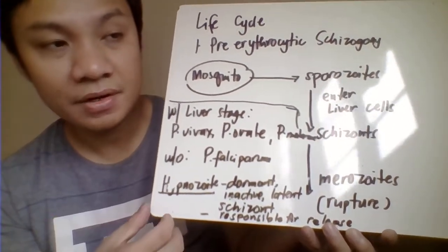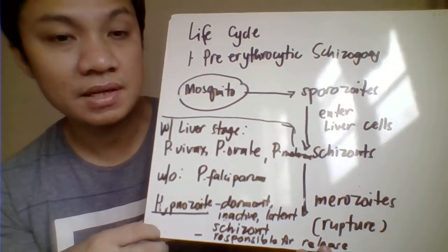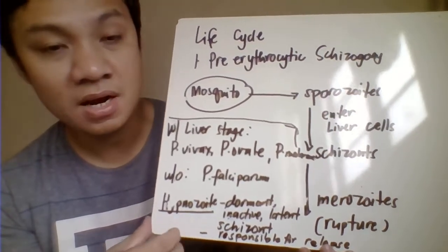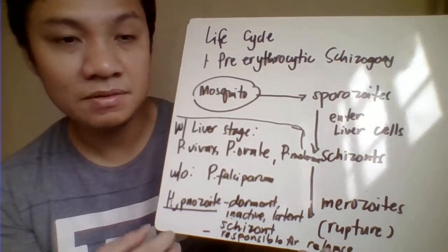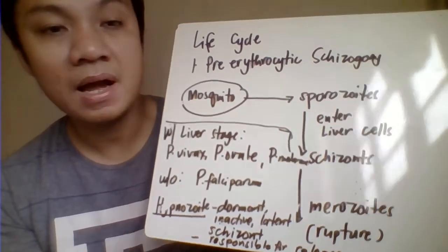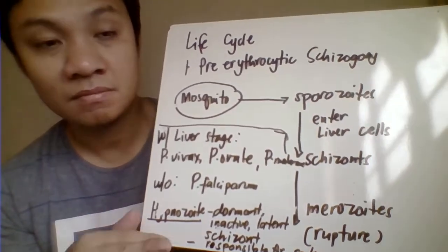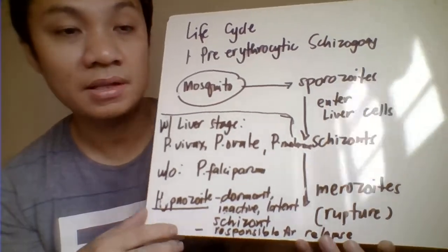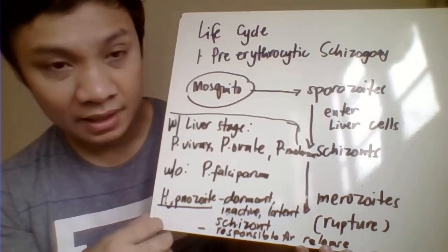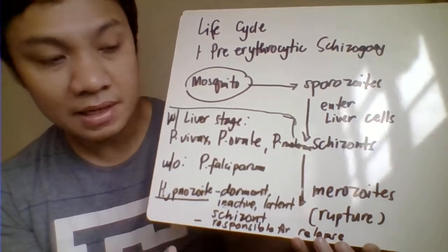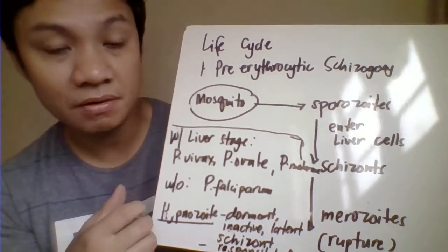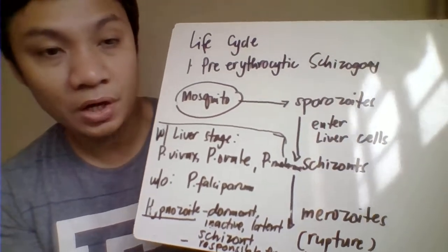Schizonts found in the liver cells can become dormant — inactive and in a latent stage. When dormant, the patient shows no signs and symptoms, but the infection can reactivate, especially if the host's immune system becomes immunocompromised. These dormant forms are called hypnozoites, which are responsible for relapse or recurrence. This is only possible for species with a liver stage; since Plasmodium falciparum lacks a liver stage, it does not have relapse or recurrence.